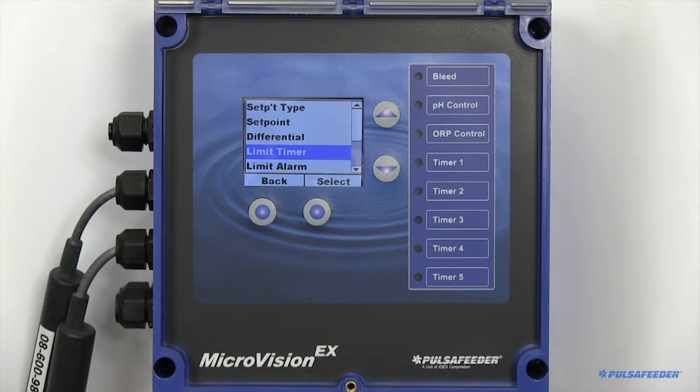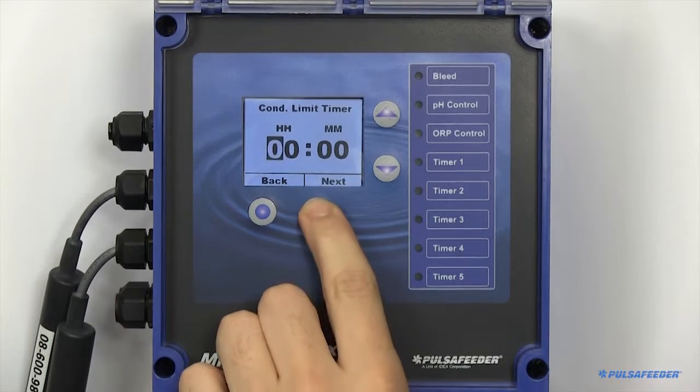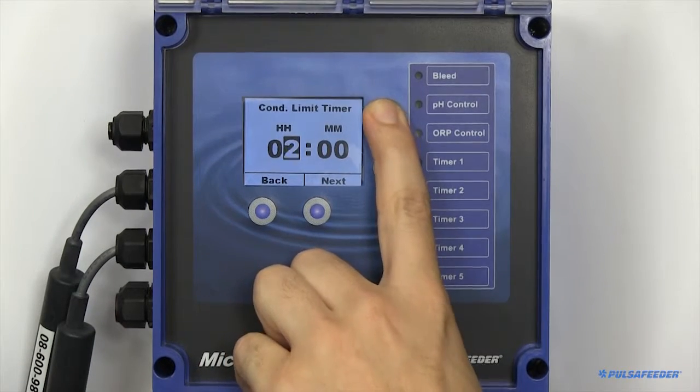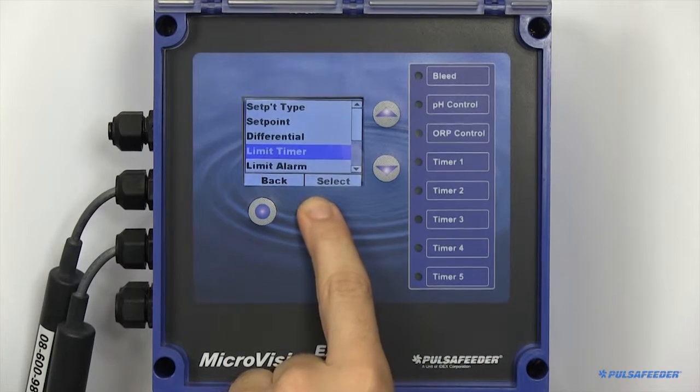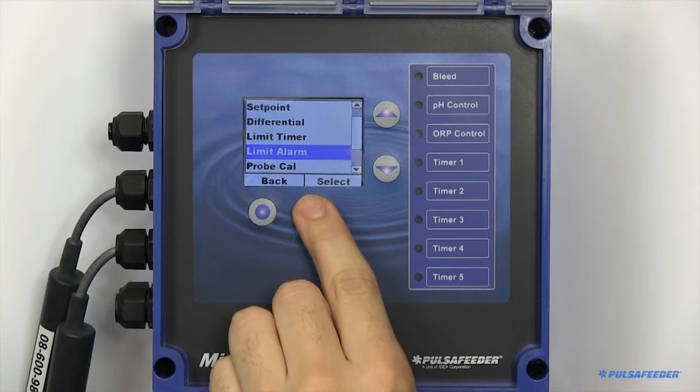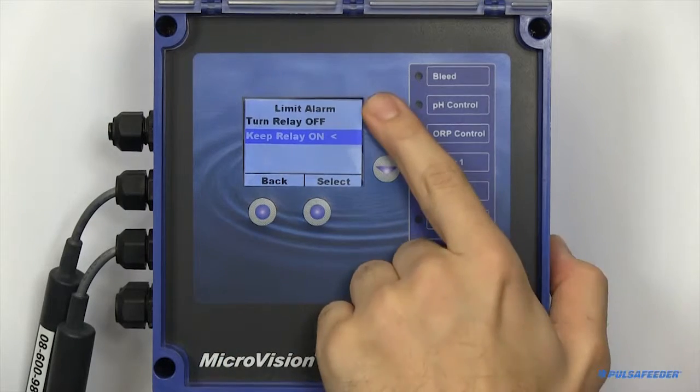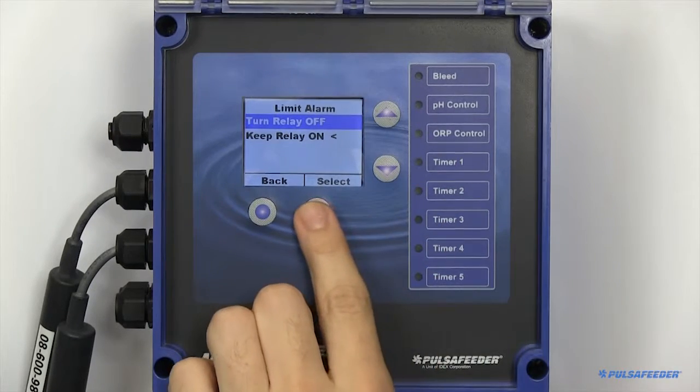The limit timer is the maximum amount of time you would like the relay to remain on until an alarm is triggered. You can set whether you would like the relay to remain on or turn off upon an alarm state triggering here.